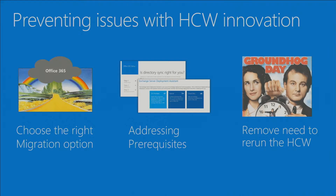We're also working to remove the need to rerun the hybrid wizard — it really sucks to run it multiple times. When we first started with the new hybrid app a year ago, the average customer ran it 3.2 times. They now run it 1.4 times, so it's going down pretty dramatically. If you're missing things on-premises, rather than giving you an error, we either try to self-heal or give you an opportunity to fix it directly in the wizard.